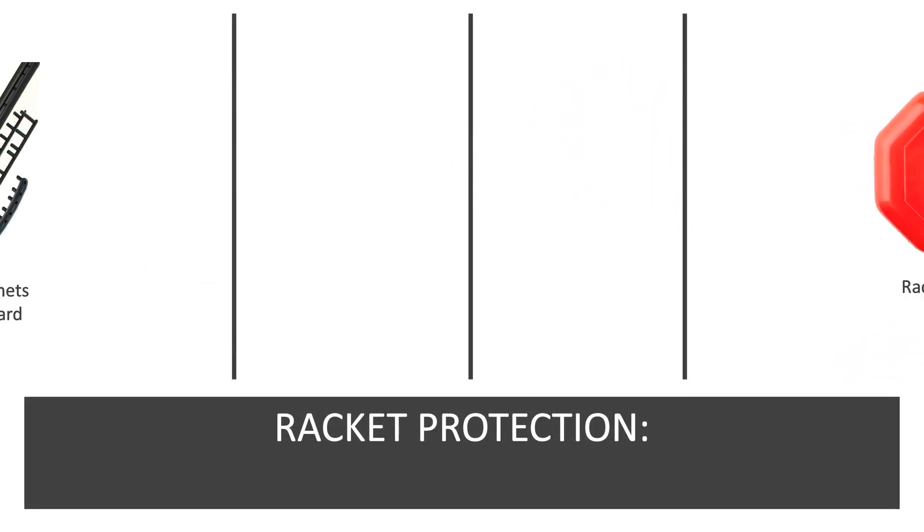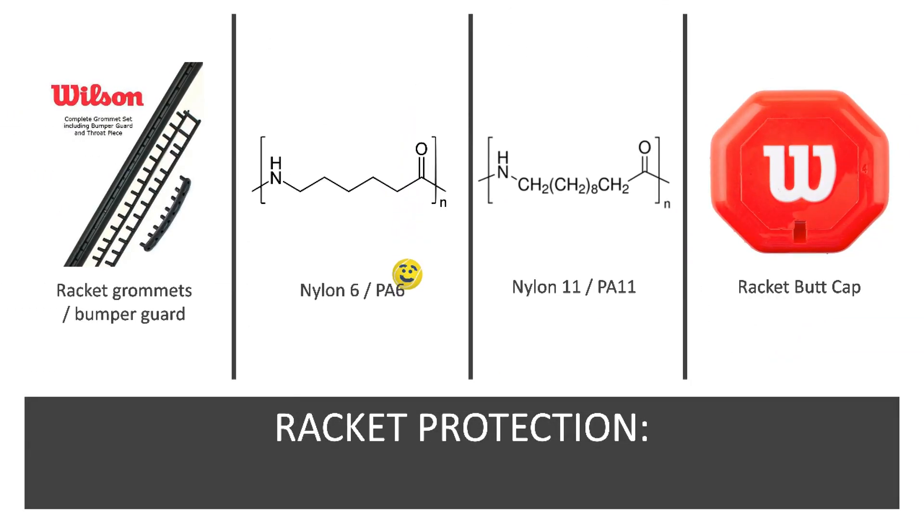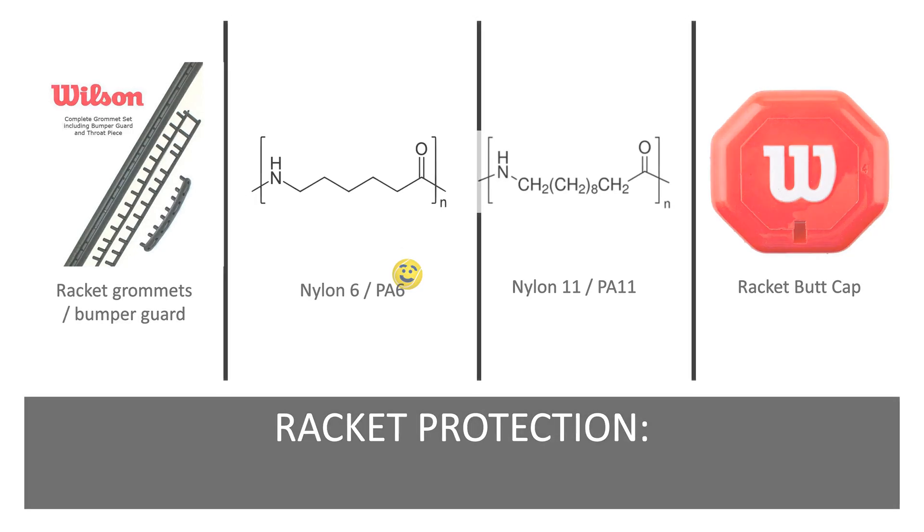In order to protect the frame of a racket, bumper guards and grommets are used. These parts are generally made of common polyamides like nylon 11 and nylon 6, which are relatively cheap but also very resistant to abrasions. Hence, they are used to protect the racket from bumps and scratches, as well as to prevent the tightly strung strings from being snapped by the sharp frame.